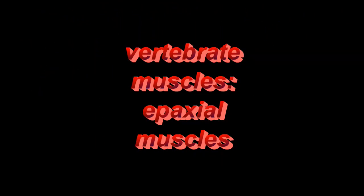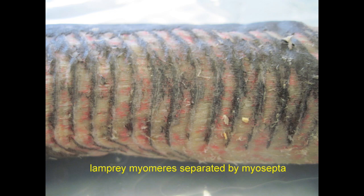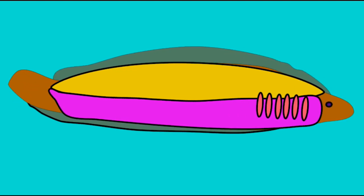In primitive chordates and jawless fish, the muscles along the abdominal wall were split into a series of segmented myotomes separated by connective tissue.